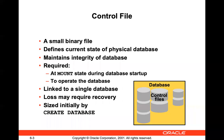You can link any database with a control file using a command. When you create a database, there are many parameters such as max log files, max redo log files, max instances, and max data files. These parameters affect the size of the control file because their values are written by the Oracle server into the control file. So the size of the control file is initially determined by the CREATE DATABASE command, particularly by the max log files, max redo log files, max data files, and max log history parameters.